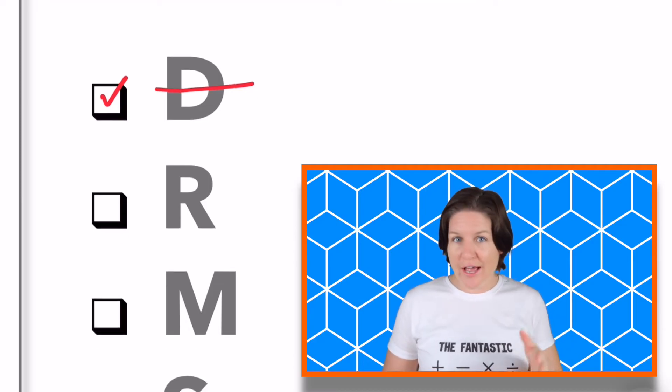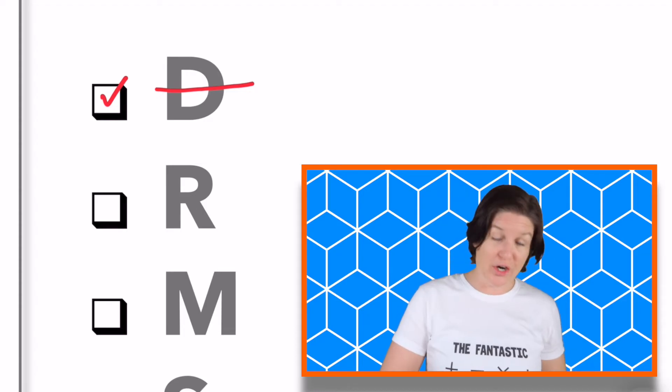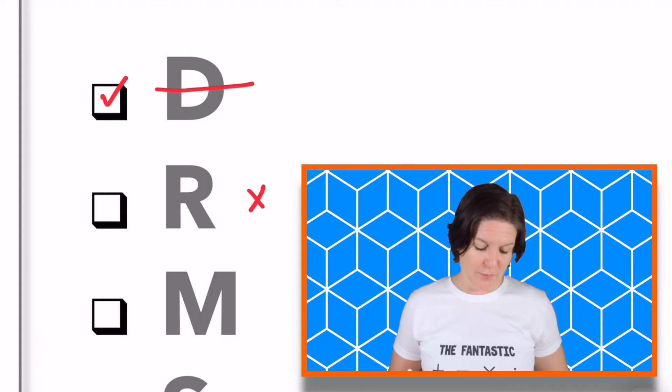For the letter R, how many lines of symmetry did you find? It should be zero. There are zero lines of symmetry. So we can eliminate that one.